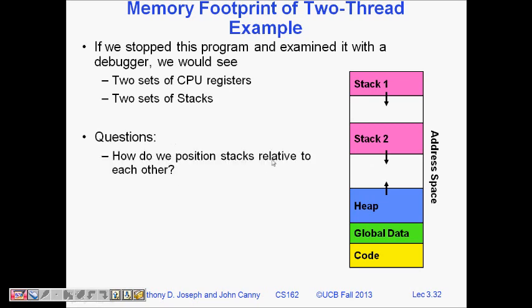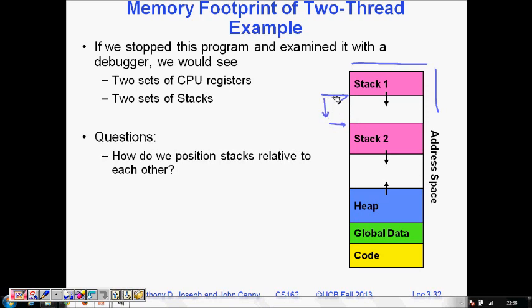How do we position stacks relative to each other? For each process you have limited amount of memory. If stack one is starting here, stack two is starting here, there is limited space in between. How to decide how much space I should give to stack one, then to stack two? Because heap is increasing here, so how to decide?